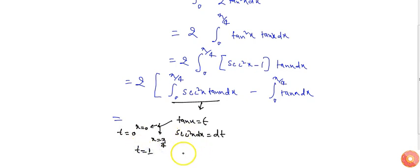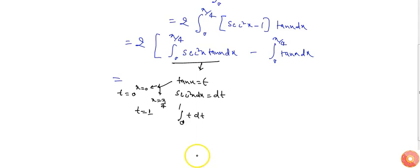So this integration will be 0 to 1, t dt, or I can say t square by 2, 0 to 1. So putting the upper limit we will get 1 by 2, and this integration will be...